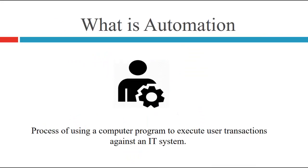Now let's see what is automation. Process of using computer program to execute system or user transaction against the IT system. This is typically done by automation tool. Automation testing tools are capable of executing tests, reporting outcomes and comparing the result with earlier test runs.